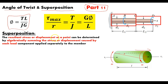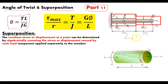As a review on superposition: the resultant stress or displacement at a point can be determined by algebraically summing the stress and displacement caused by each load component applied separately to the member. Looking at this shaft, we have two torques - one at B and one at D - a change in diameter from D1 to D2, and two different lengths. To find the angle of twist at D, we get the angle of twist for both section one and section two and sum them together.